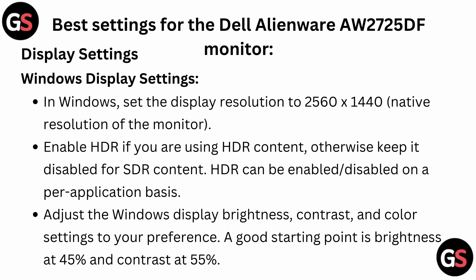In Windows, set the display resolution to 2560x1440p, which is the native resolution for this monitor. Enable HDR if you are using HDR content; otherwise keep it disabled, as HDR can be enabled or disabled on a per-application basis. A good starting point for Windows display settings is brightness at 45% and contrast at 55%.